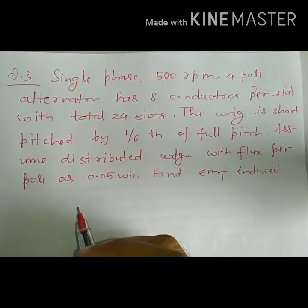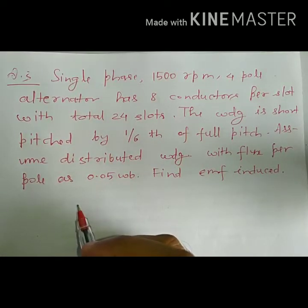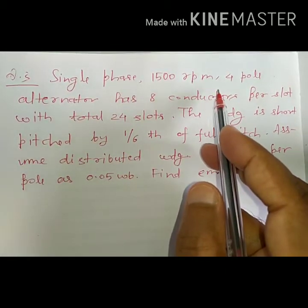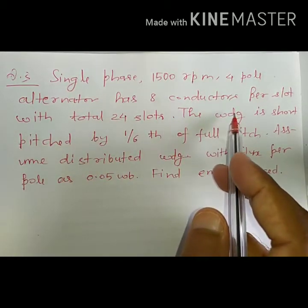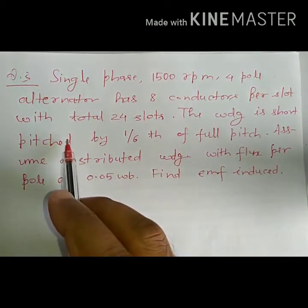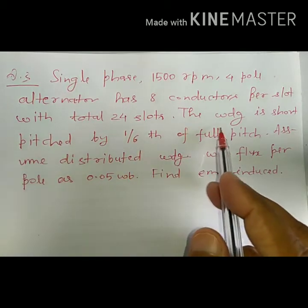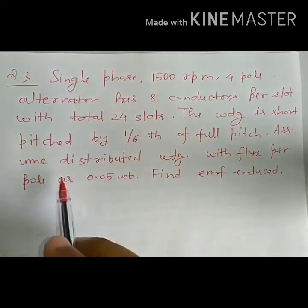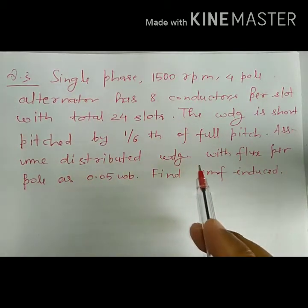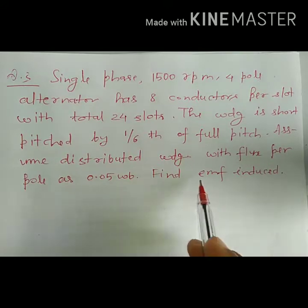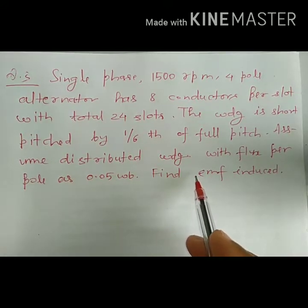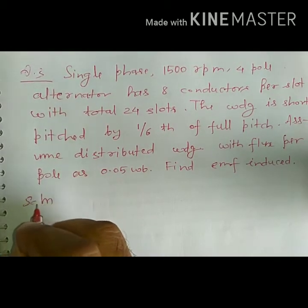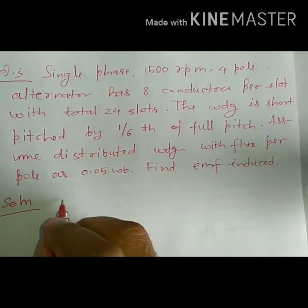In continuation with numericals, let us go for another numerical. A single-phase 1500 rpm, 4-pole alternator has 8 conductors per slot with a total of 24 slots. The winding is short pitched by 1/6th of full pitch. Assume distributed winding with flux per pole as 0.05 Weber. Find EMF induced.